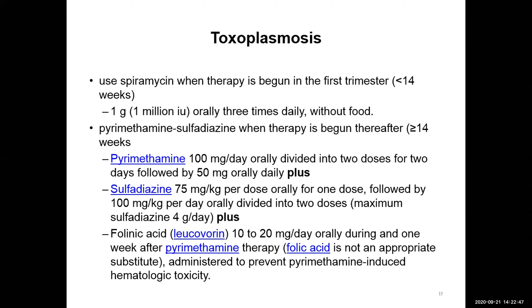There are drugs we can use for toxoplasmosis. Spiramycin can be used even in pregnancy. Pyrimethamine with sulfadiazine is what we usually have in our setting and is easily accessible, but it is not advisable to use in the first trimester. It would also be good to give folinic acid alongside.